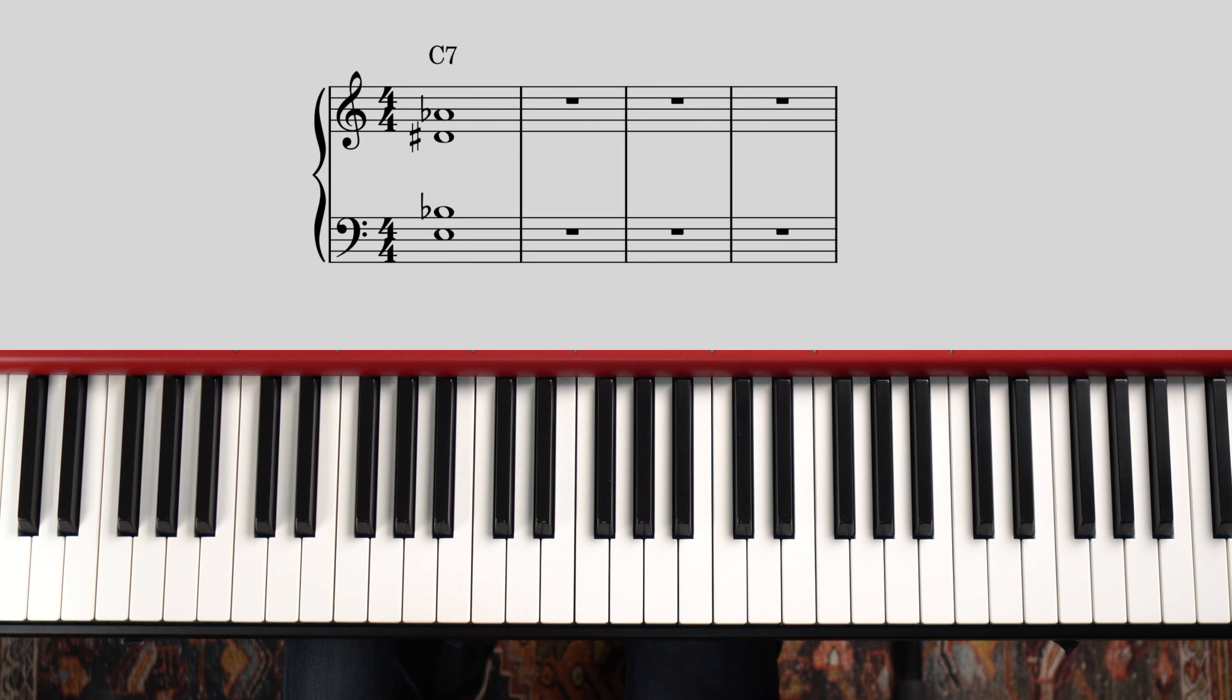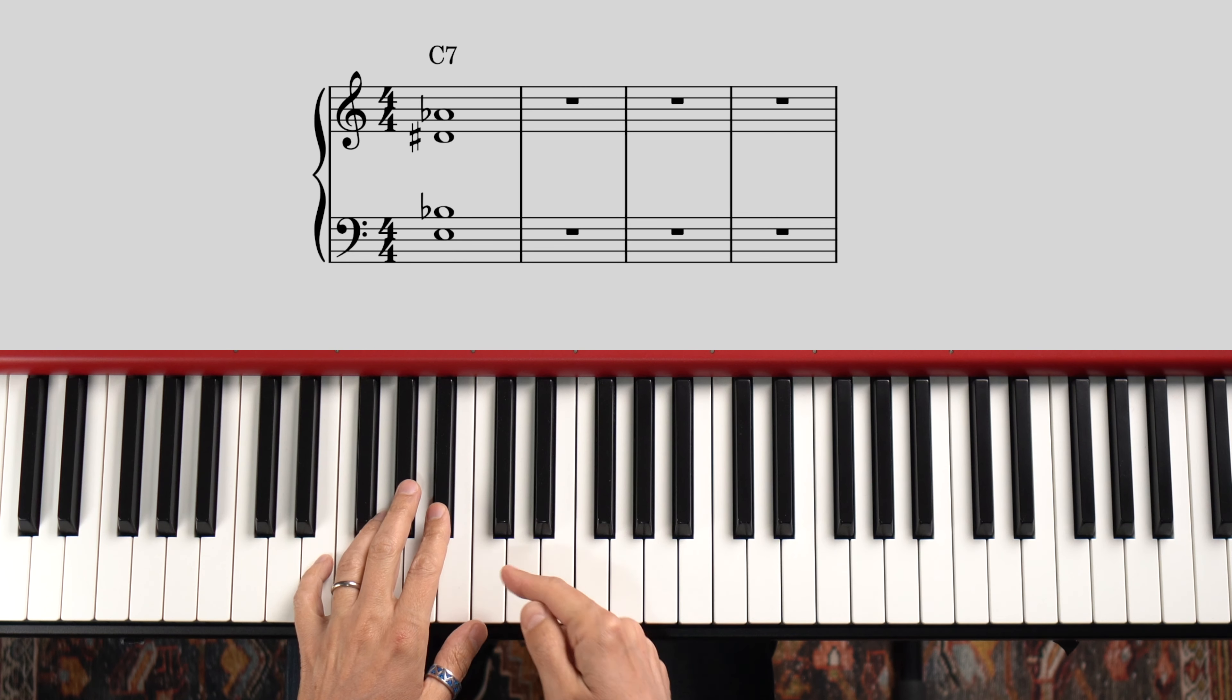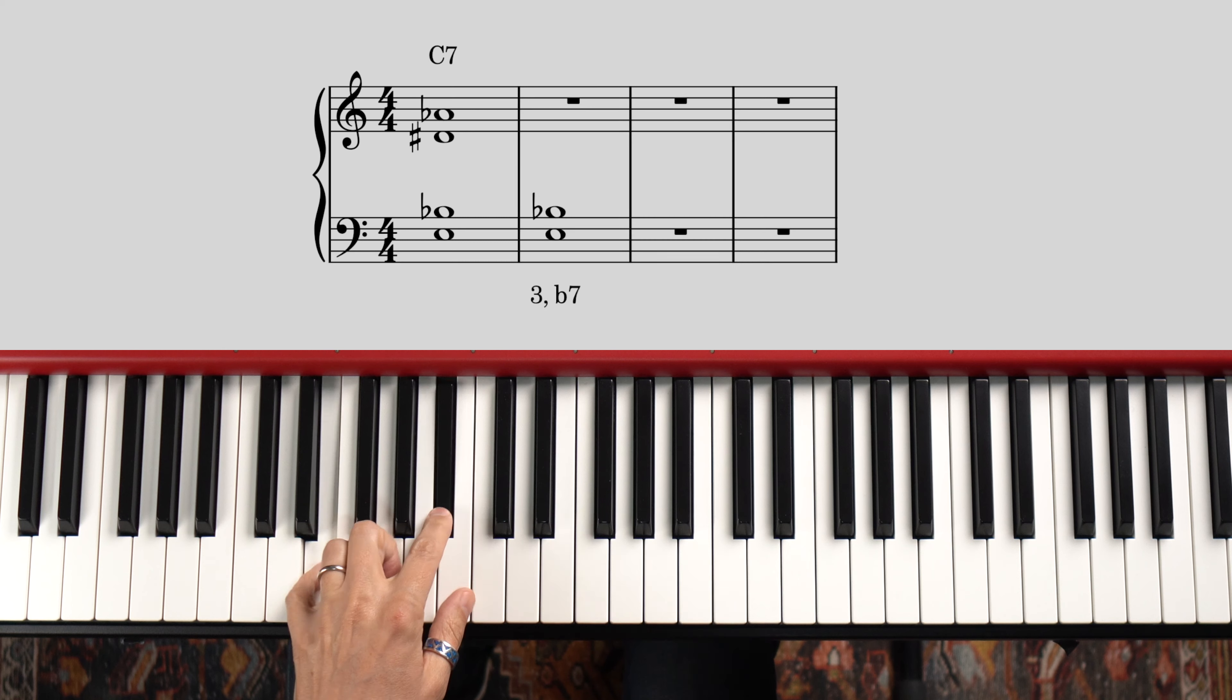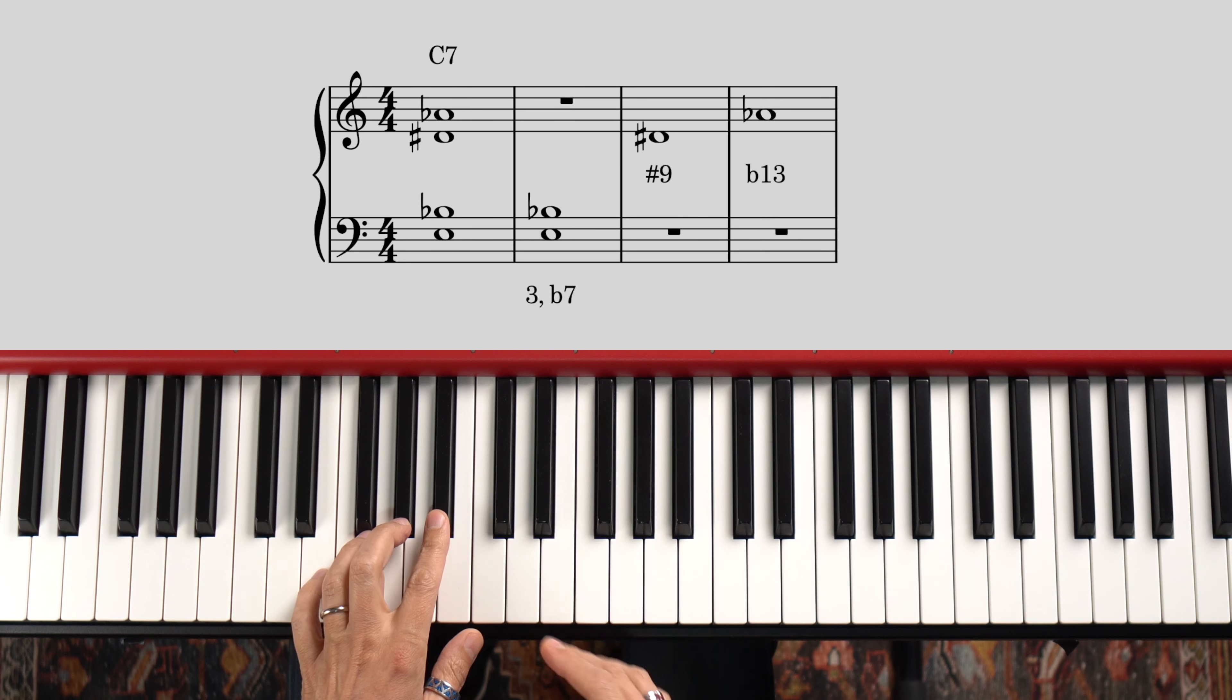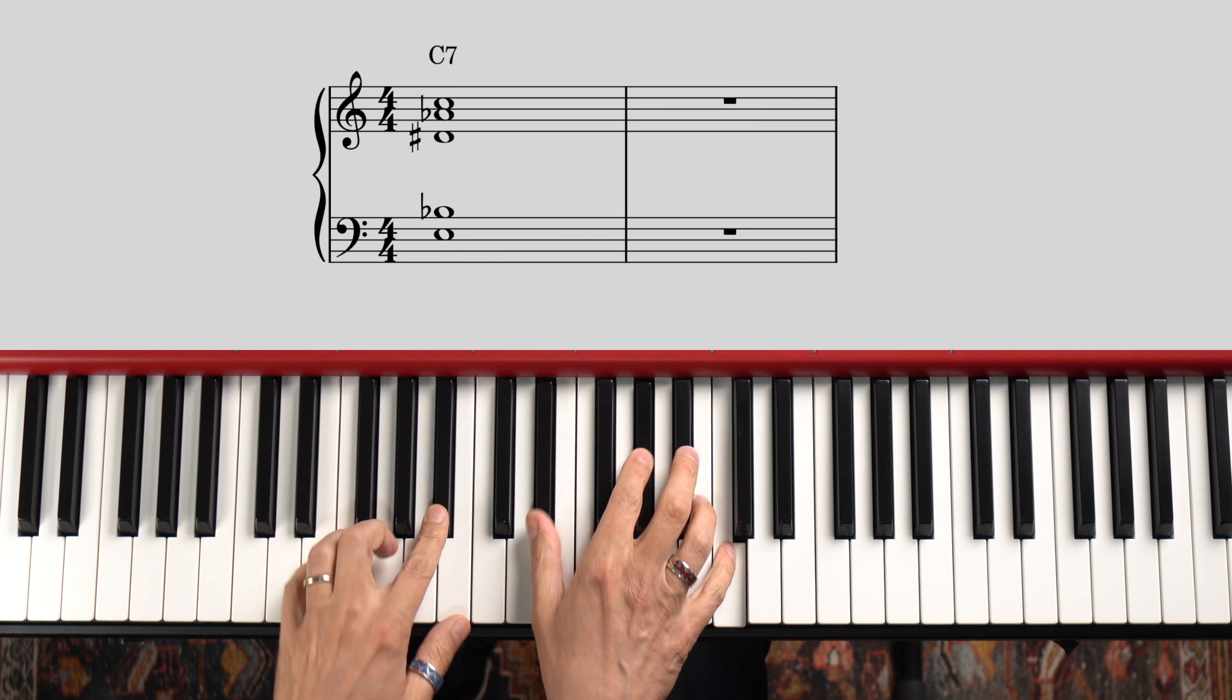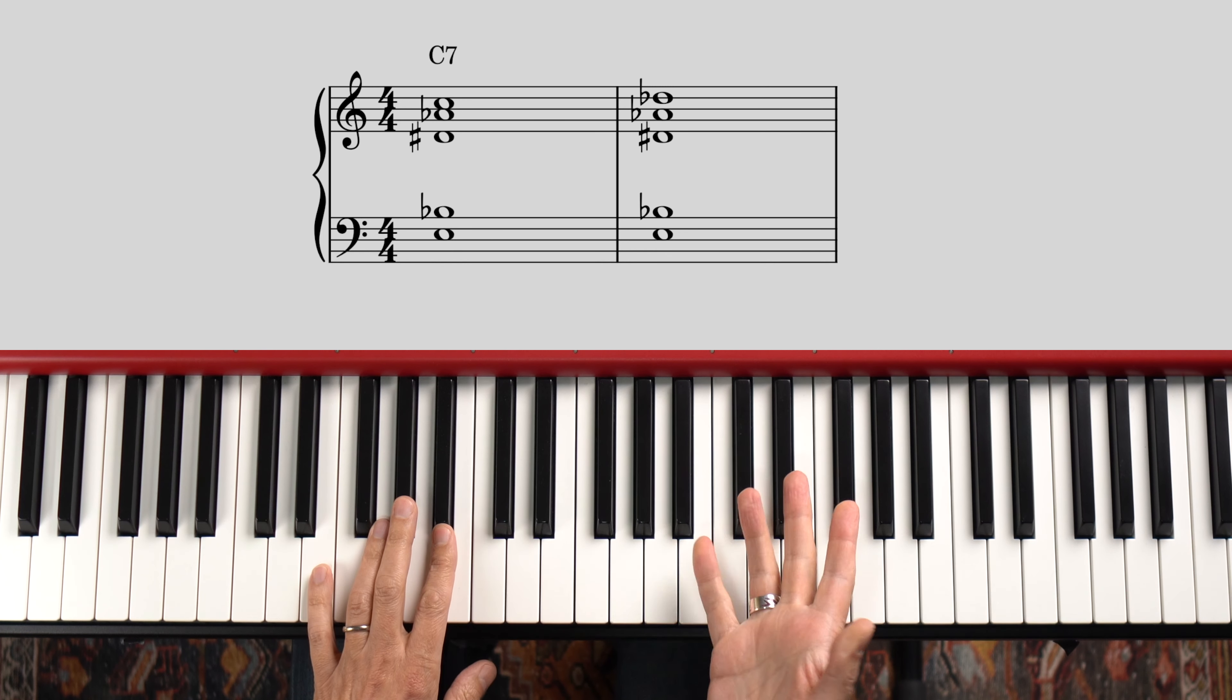Here's a typical voicing for an altered C dominant chord. It's got the guide tones 3 and 7 at the bottom, then sharp 9 and flat 13. If I wanted to add another note at the top, the most common choices would be either the root like this, or the flat 9 like this. And they both sound great.